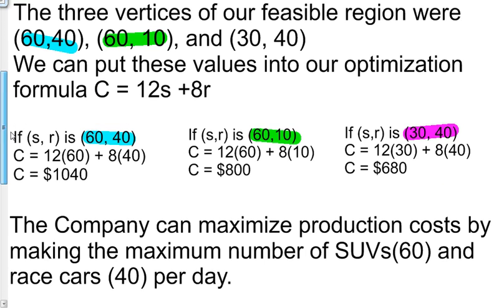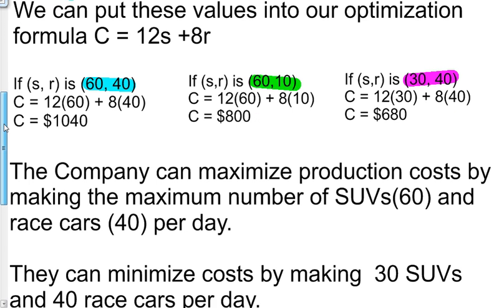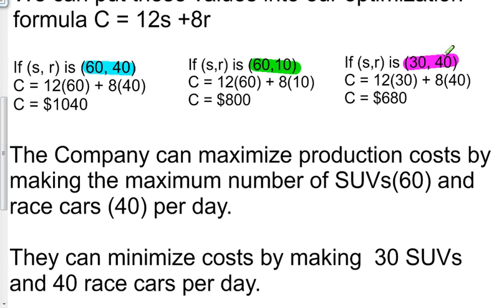So the company can maximize production costs by making the maximum number of SUVs and race cars per day, 60 and 40. This makes sense. They can minimize costs by making 30 SUVs and 40 race cars per day. That yields the least cost.